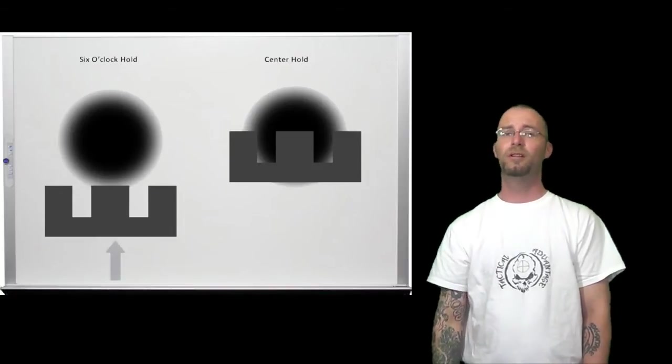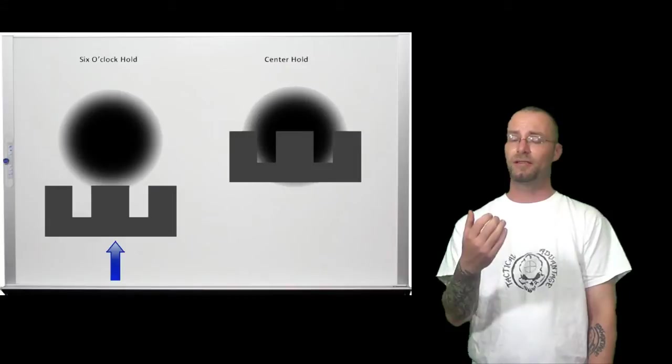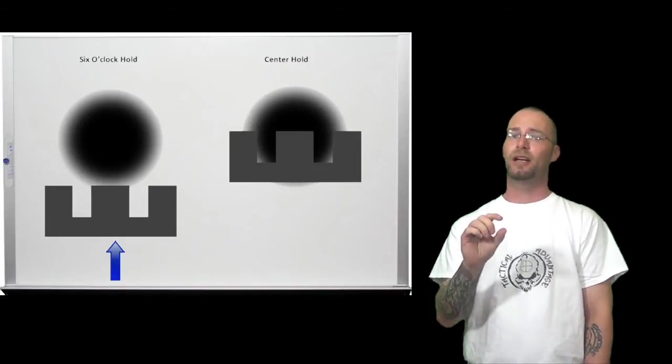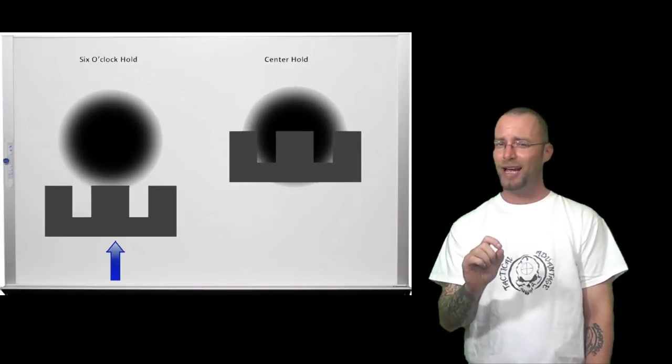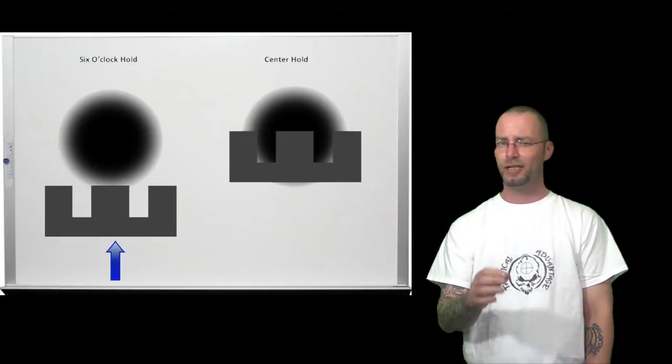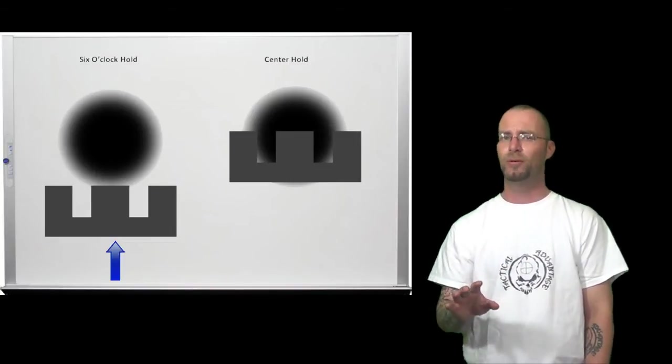There is also the 6 o'clock hold which puts the apex of the sight directly underneath the desired point of impact. This is usually a faster method when working in situations where speed is more important than pinpoint accuracy.